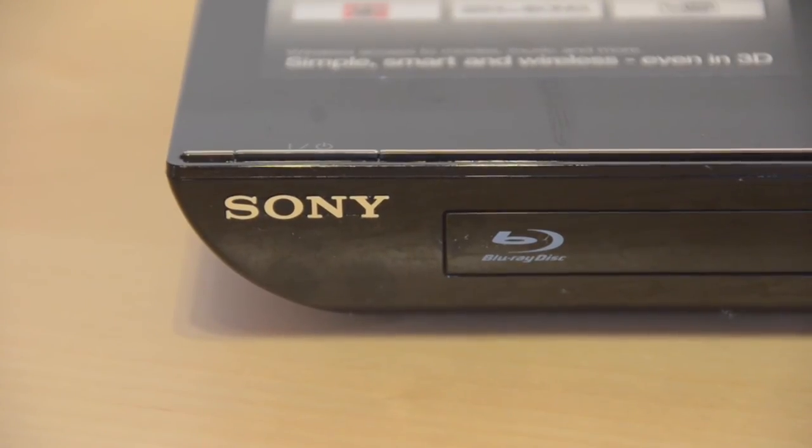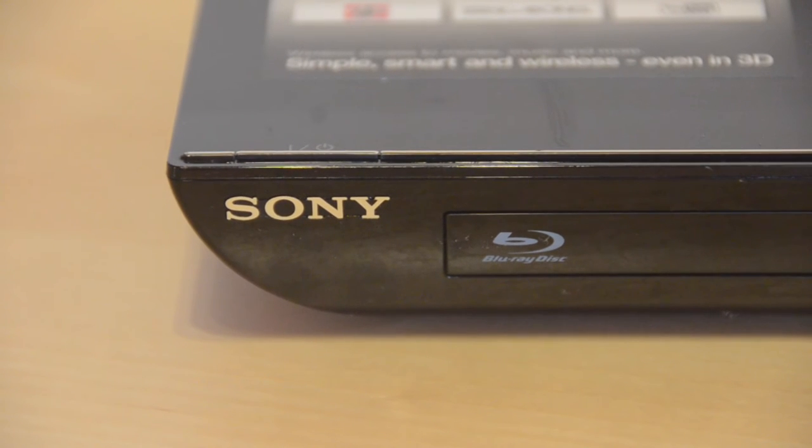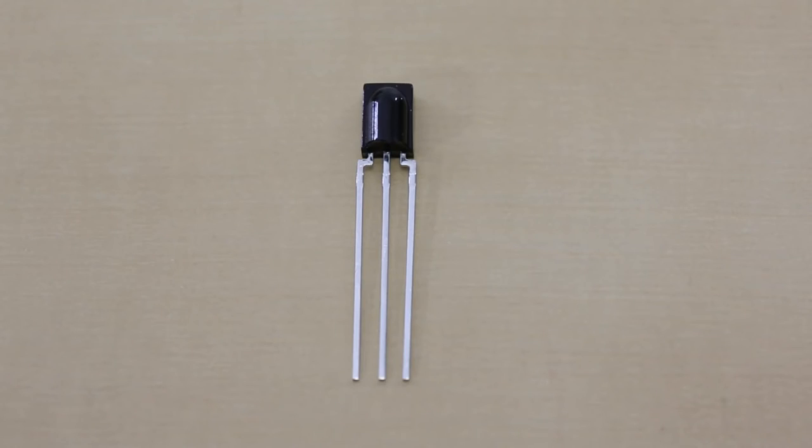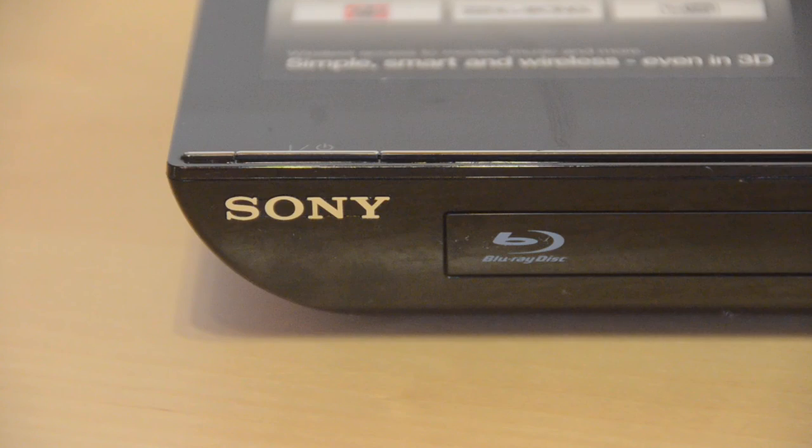In the receiving device, in our case this DVD player, this whole process is essentially repeated in reverse. The IR receiver diode picks up the incoming IR impulses and converts them back into their original electric signal. This signal is then carried to the circuitry of the DVD player and is recognized as the on-off button being pressed on the remote.